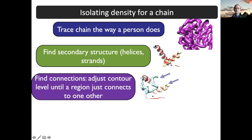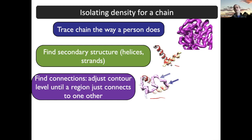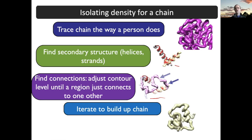In the map-to-model procedure, we basically try to trace the chain the way a person does when building a model by hand with Coot or O. First, you look for helices and strands — secondary structure is often obvious in a map — so you can build a good part of the structure in pieces by placing helices or strands. The trickier part is finding the connections. We dial the contour level until the contours between one secondary structure element and another just connect — the main chain is higher density than side chains, so this works pretty well.